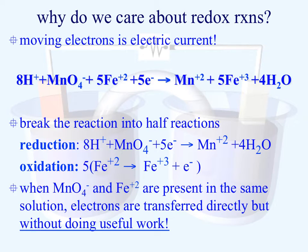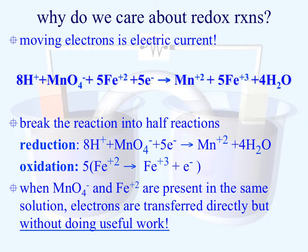Now that we understand redox reactions, why do we actually care about them? The reality is that these redox reactions, when they're in the same container, are actually passing electrons between the two half-reactions. We have one that's a reduction and one that's an oxidation — one that is picking up the electrons and one that is releasing the electrons. When they're in the same container, this transfer occurs, but the transfer of electrons isn't useful with respect to work. However, if we separate them, a different story can be seen.